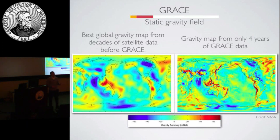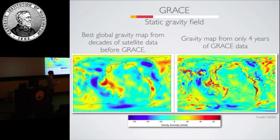GRACE was really successful. On the left is what the static gravity field looked like from satellite data prior to GRACE — those missions were generally higher-orbit, so lower-resolution. On the right is what you get by summing four years of GRACE data to form a static field. You can really see that our picture of the gravity field has improved — you can see more detail in the Tibetan Plateau, gravity changes associated with subduction zones in the Western Pacific, and a clear picture of the Andes.